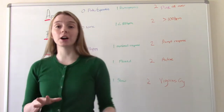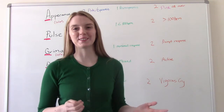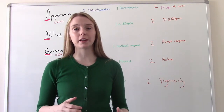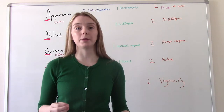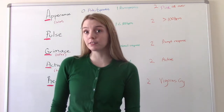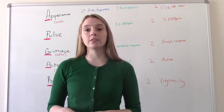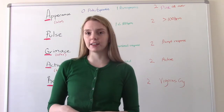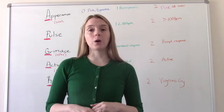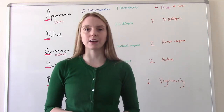So before we talk about how to figure it out, let's talk about what it is and what we use it for. An APGAR score is something that we use to determine fetal well-being immediately after birth. We do it at one minute of life and five minutes of life. And if they get a score of less than seven at that five minute mark, we will continue to do it — a ten minute one and then every five minutes after that if they still can't get above a seven.